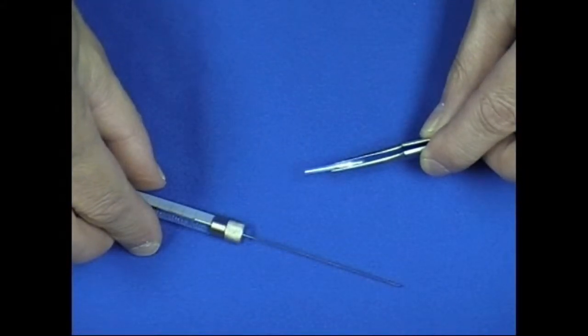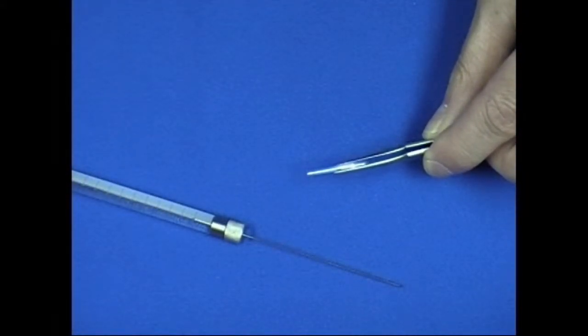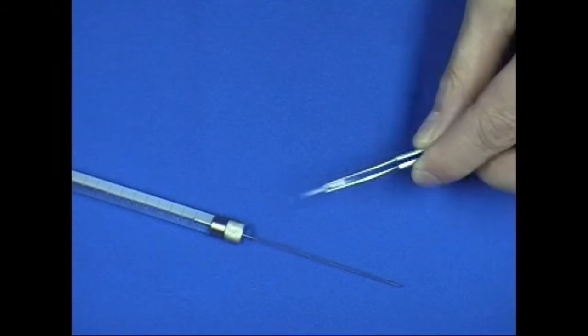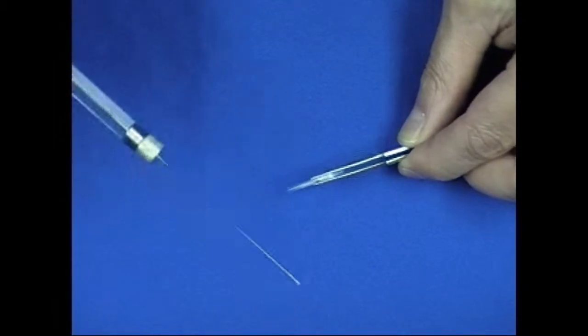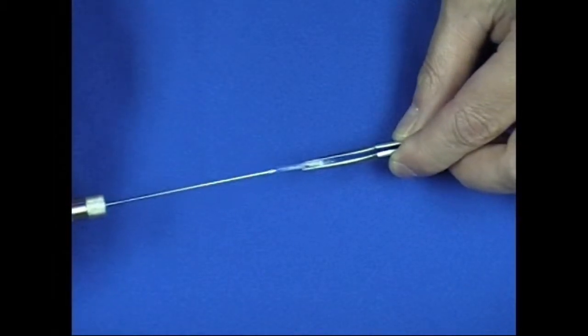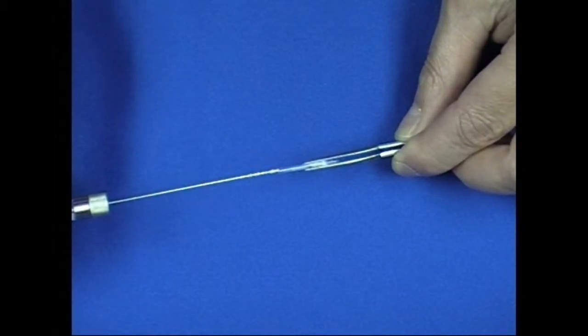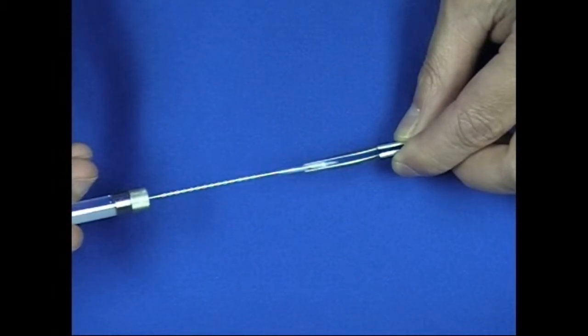The standard coil pyroprobe can be used for liquid samples, either viscous liquids or solutions, by taking a quartz tube, filling it with quartz wool, and then using a microliter syringe to put the sample down inside the quartz tube where the quartz wool is.